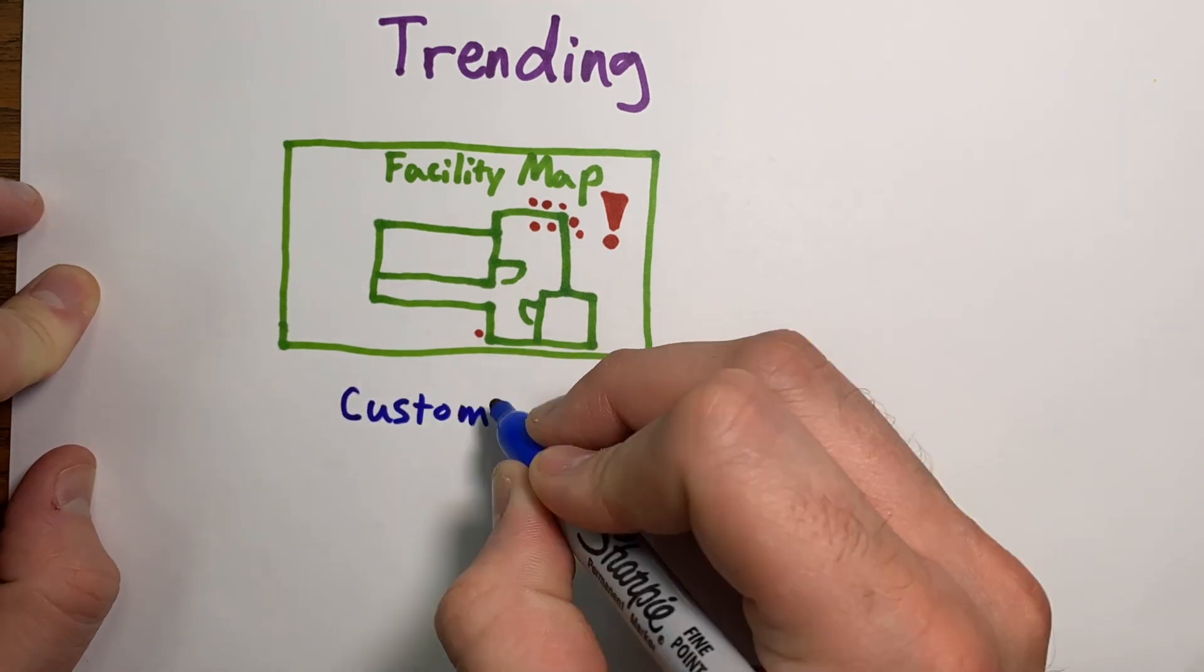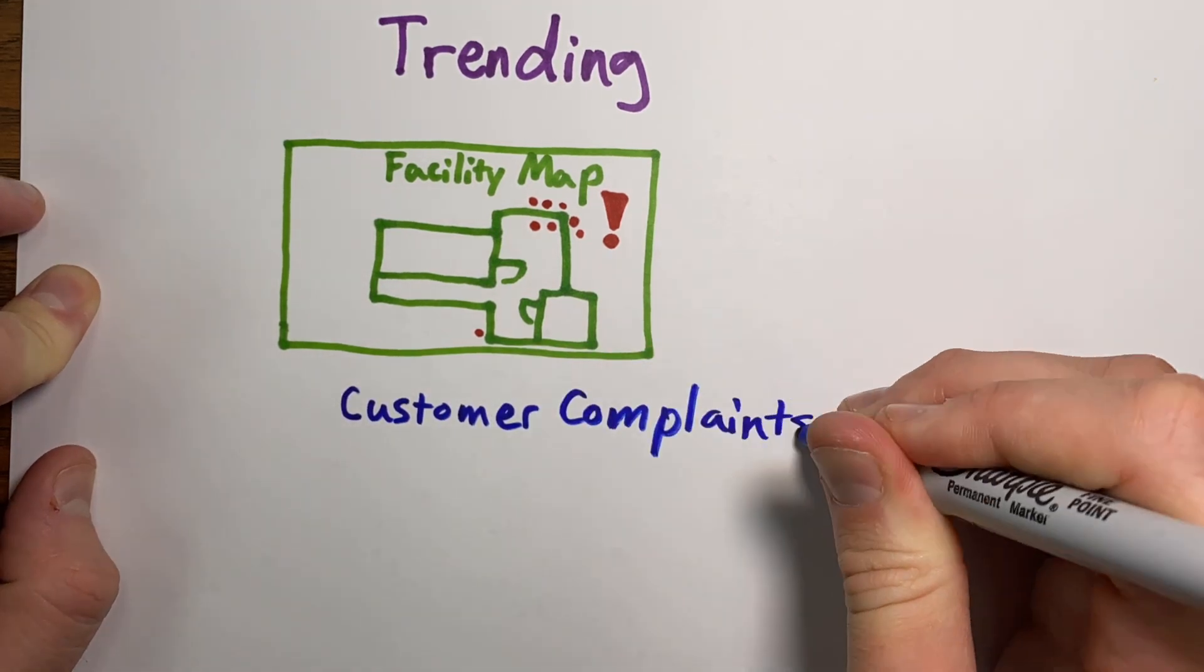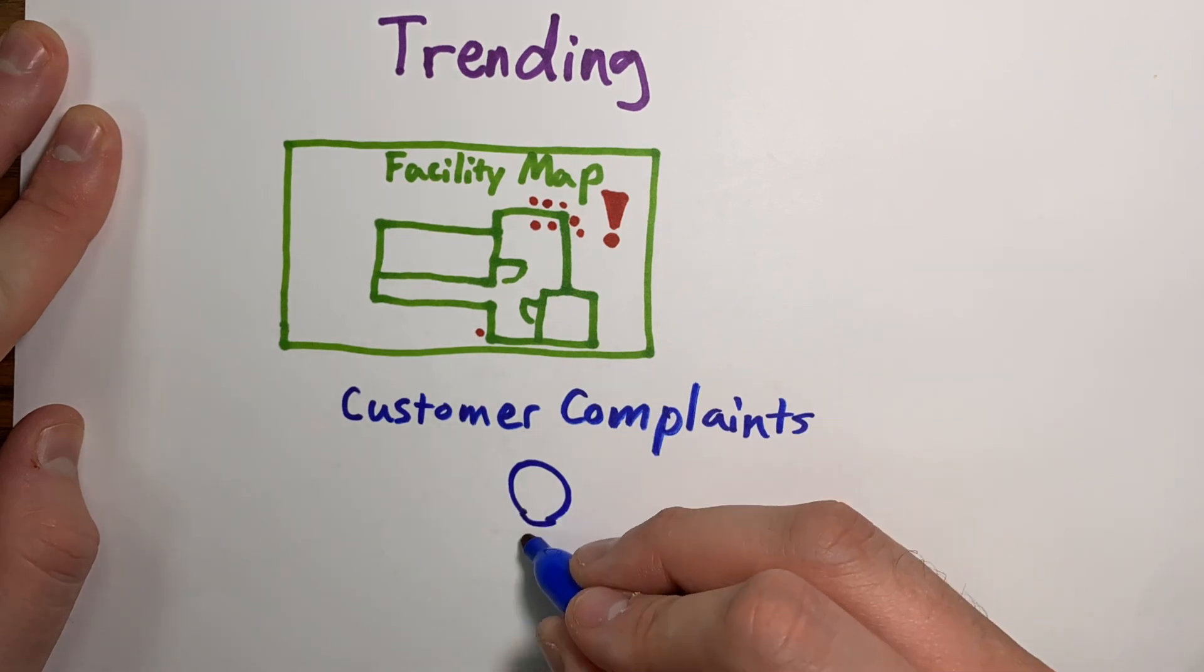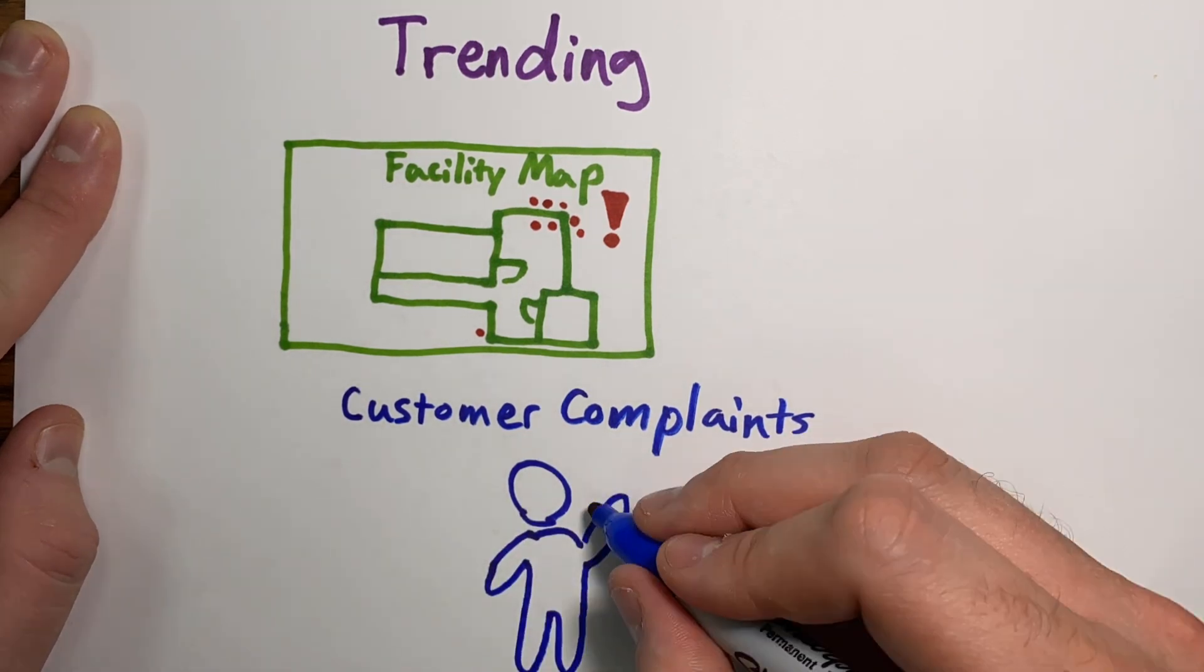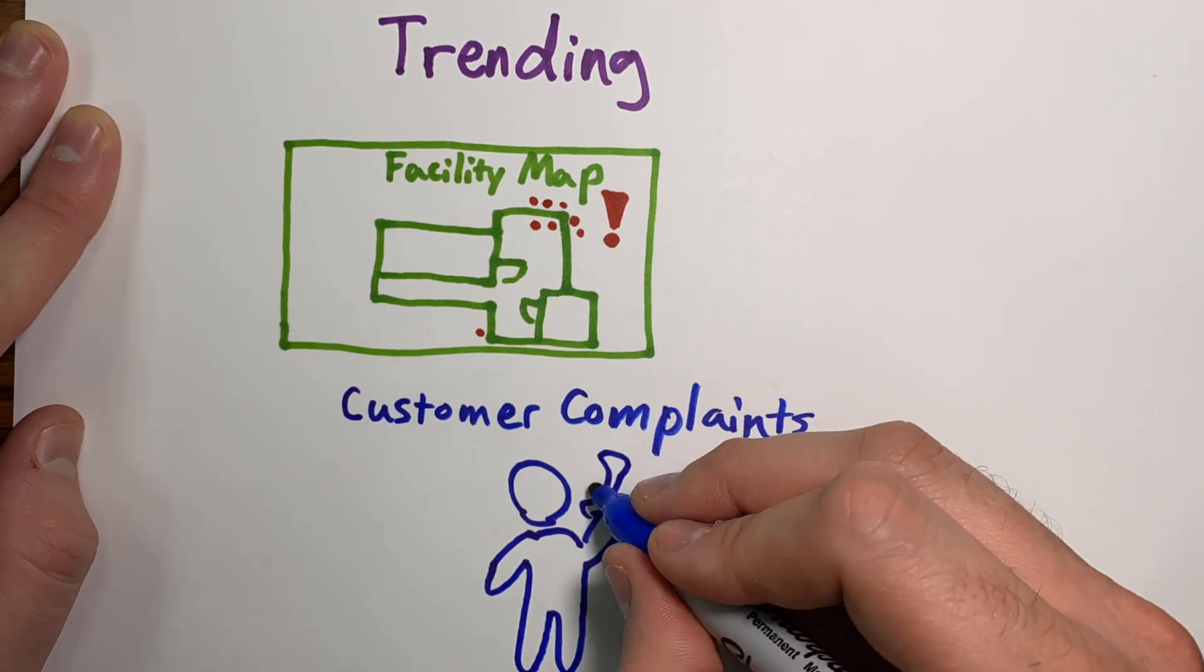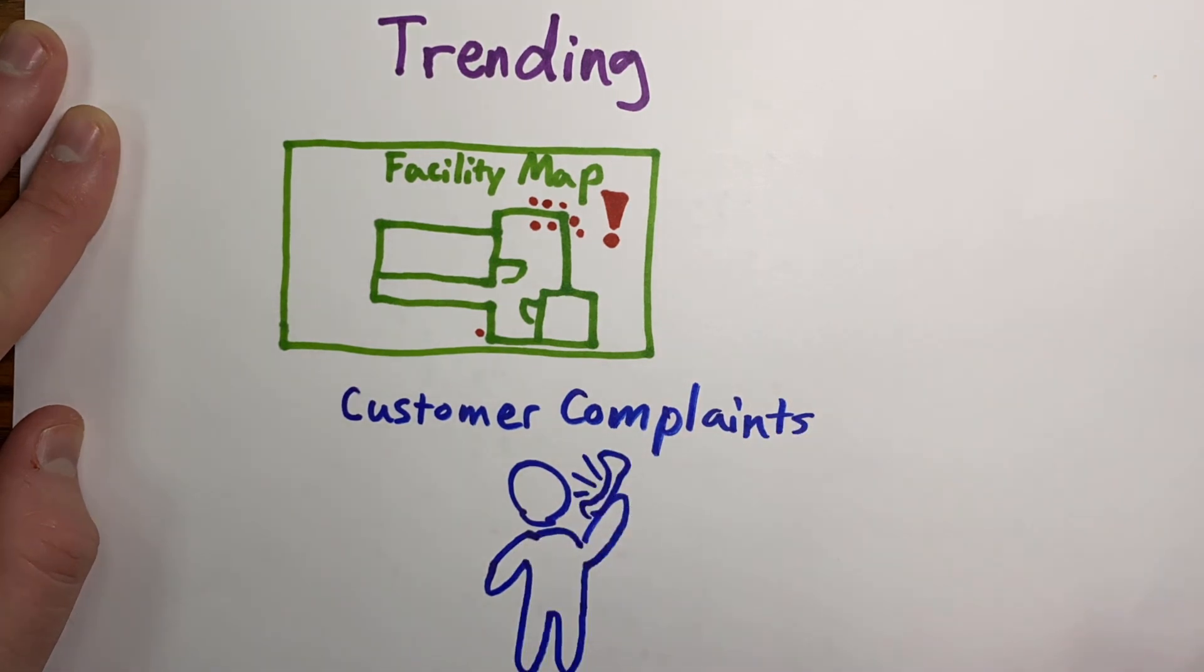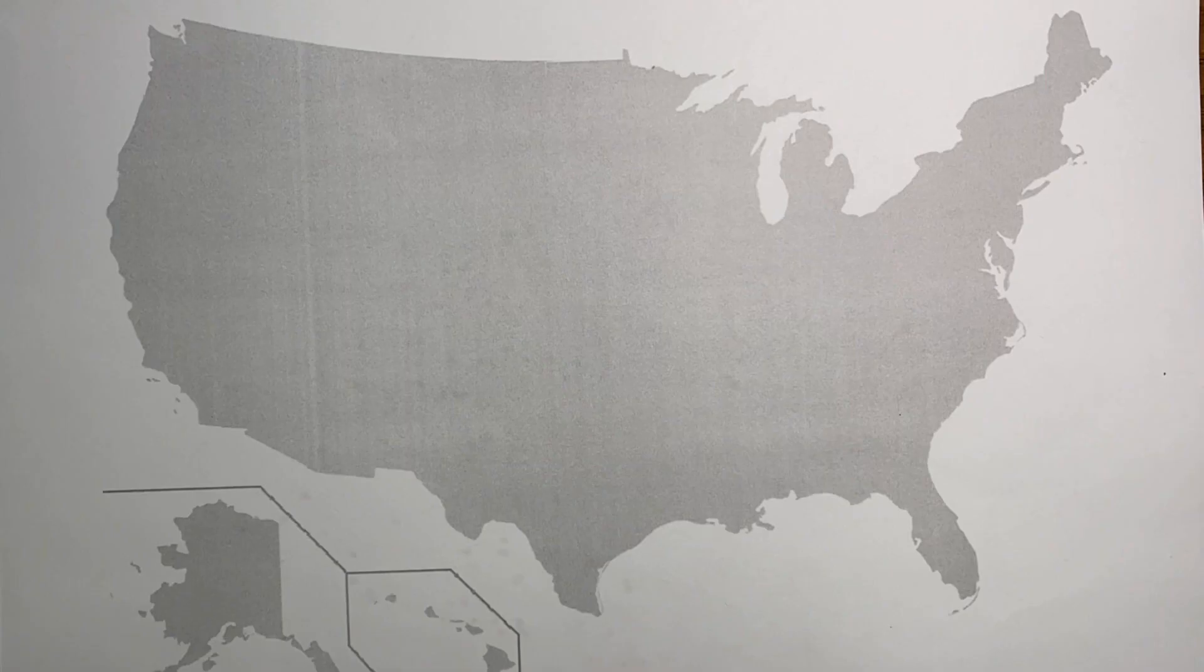This data will help give you an approach as to where you might need mitigation resources or where you should investigate further. Also, use customer complaints to your advantage. Hopefully you're not getting customer complaints about bug parts or spider webs, but if you are, you should investigate it thoroughly.